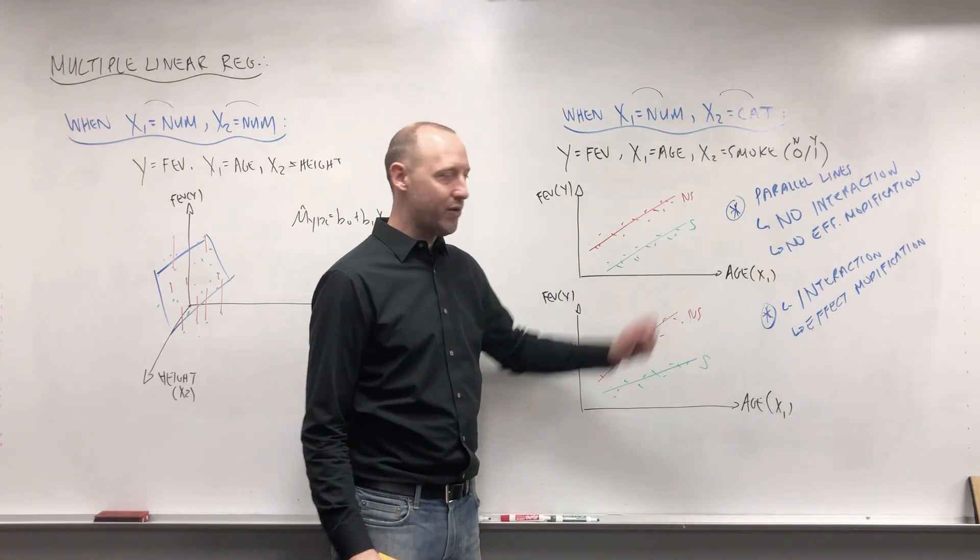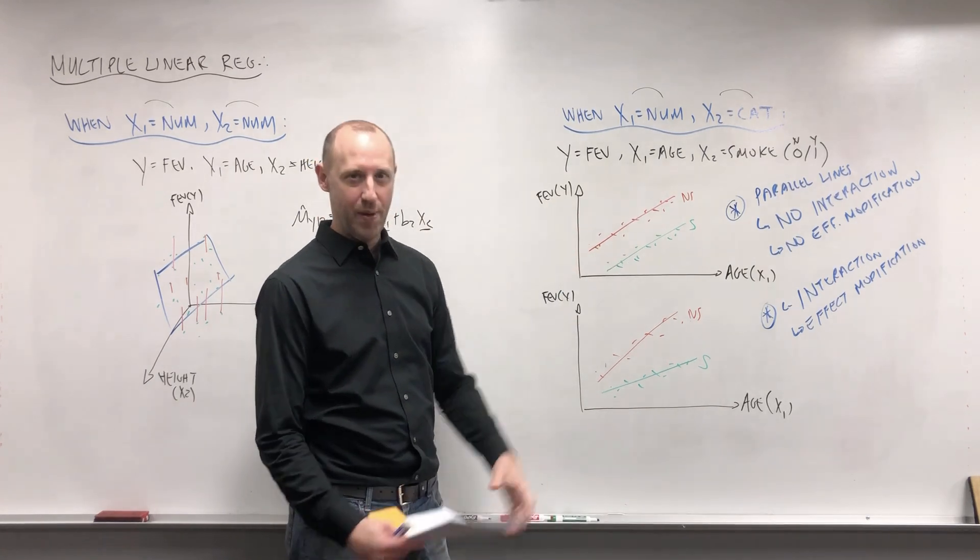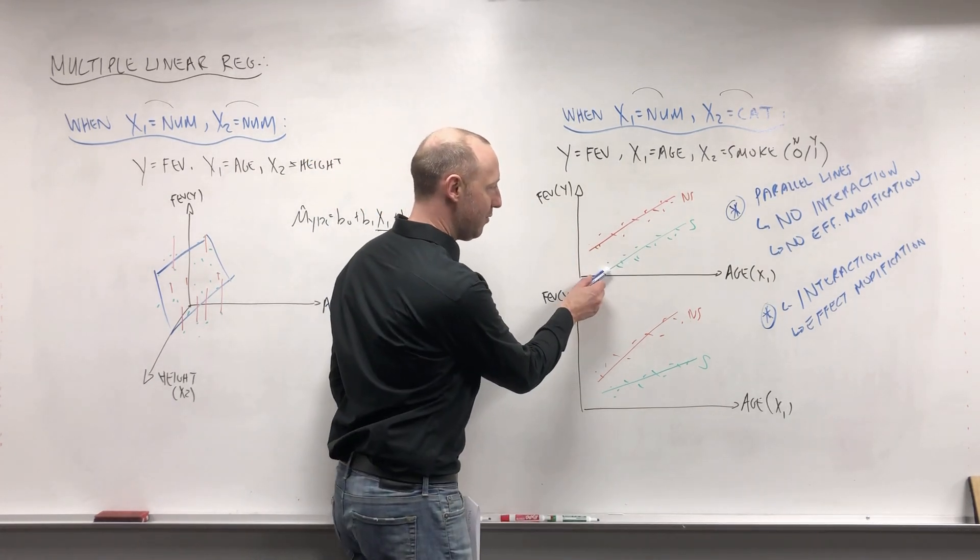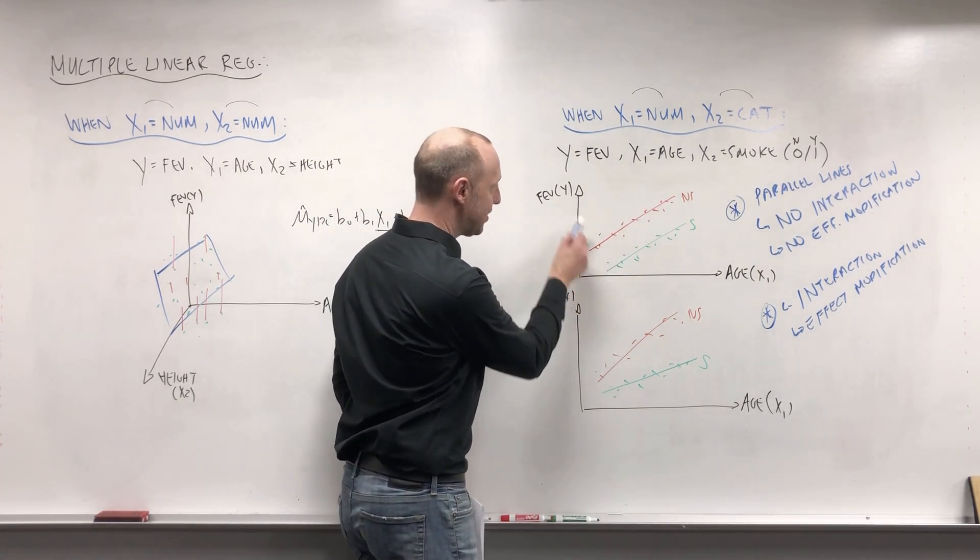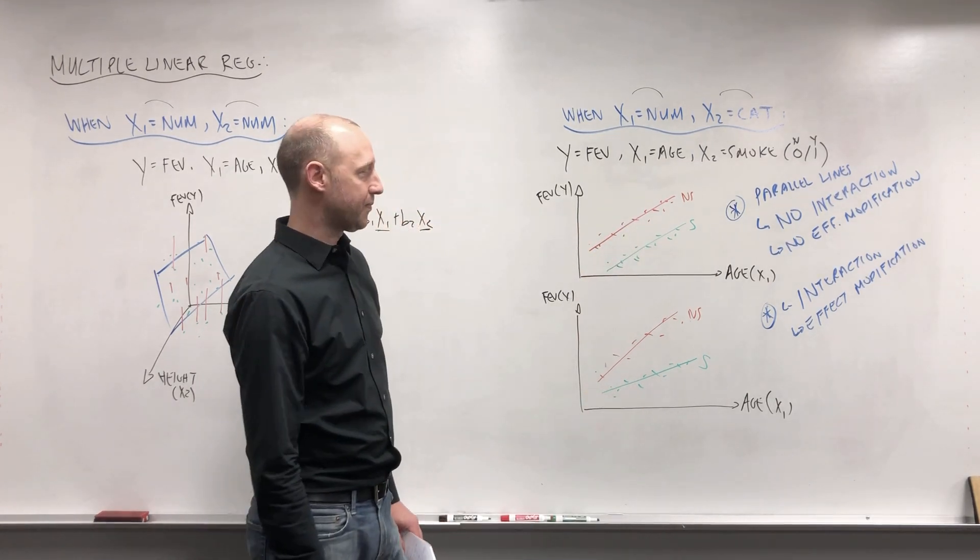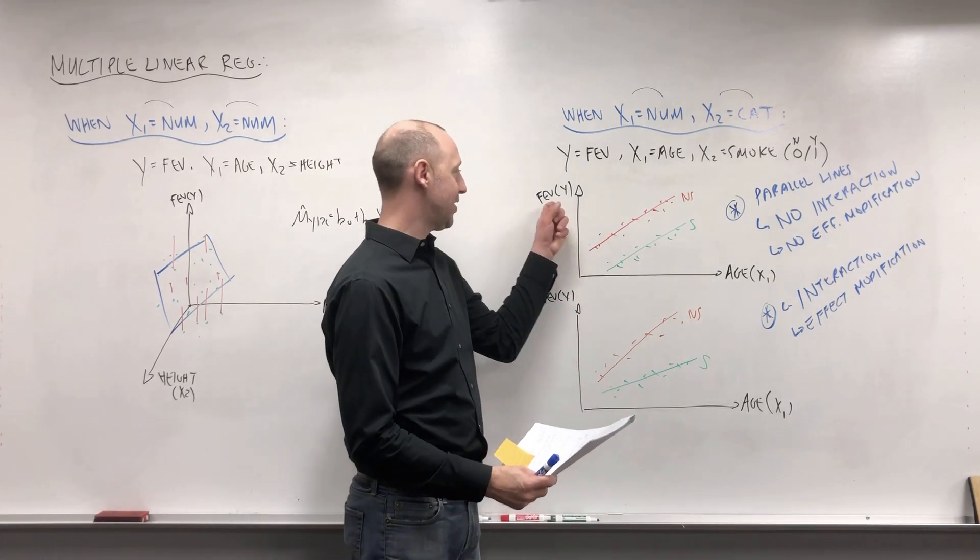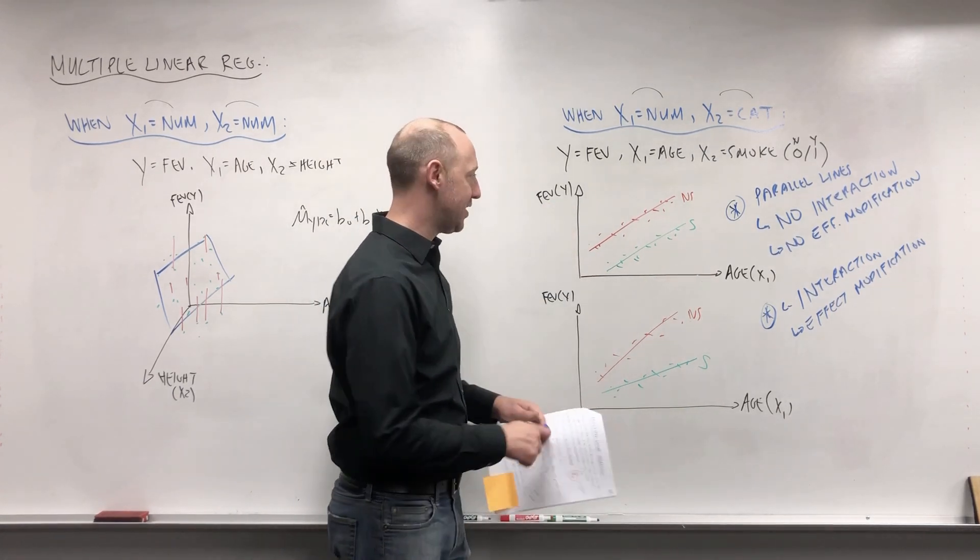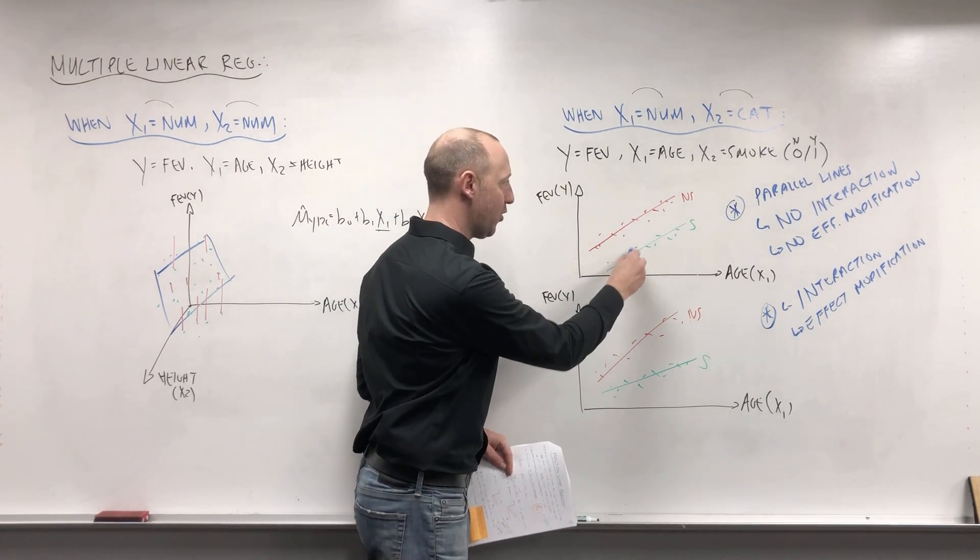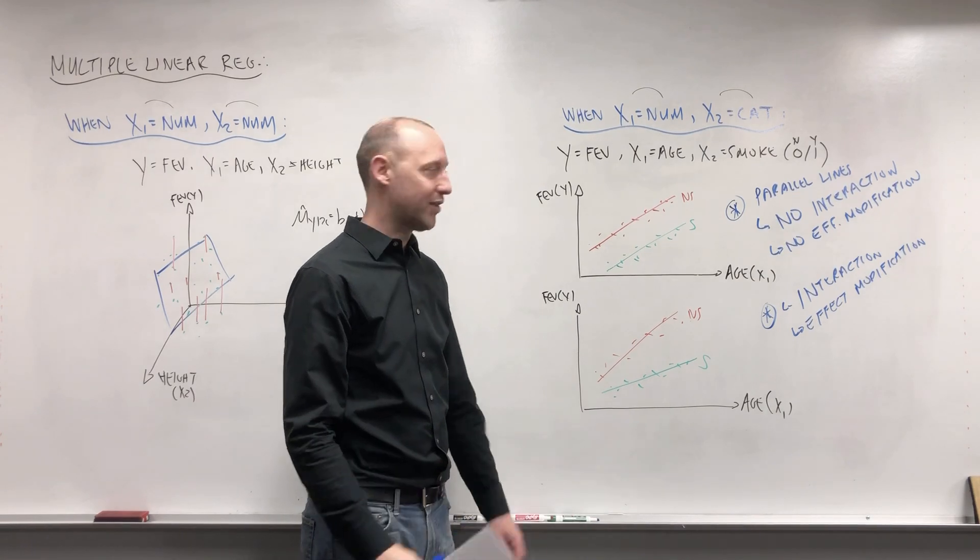But the kind of quick version is no interaction or no effect modification is saying the effect that age has on FEV does not depend on smoking, right? The rate, the slope, or the rate at which FEV increases with age is the same for smokers and non-smokers. Or we can say the effect that smoking has on FEV is the same at any age. The distance between the smokers and the non-smokers is the same at any age. These two effects do not interact, or one effect does not depend on the other.